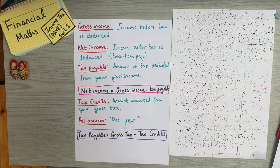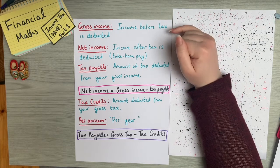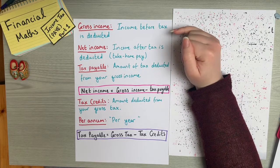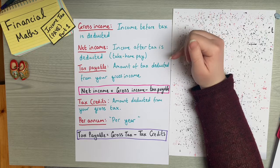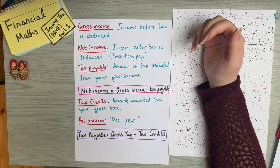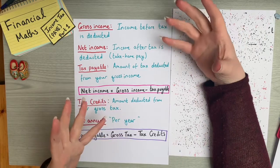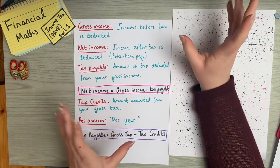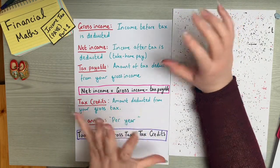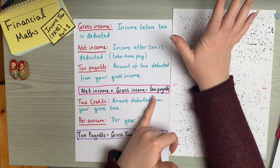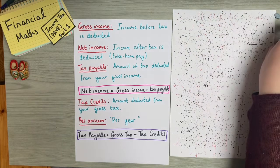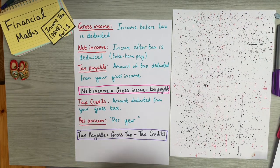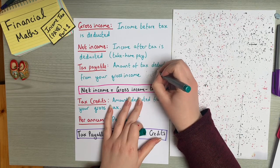Gross income is your income before tax is deducted. Net income is your income after tax is deducted — your take-home pay. Tax payable is the amount of tax deducted from your gross income. So: net income equals gross income minus tax payable. It's worth noting that tax payable is sometimes referred to as net tax.